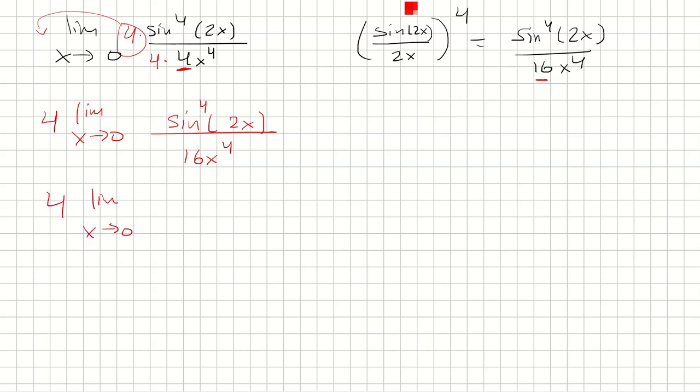And then I can factor out the fourth power at sine 2x over 2x, all raised to the fourth power, which I can even pull out the exponent. And I just take the limit as x approaches 0, sine 2x over 2x.